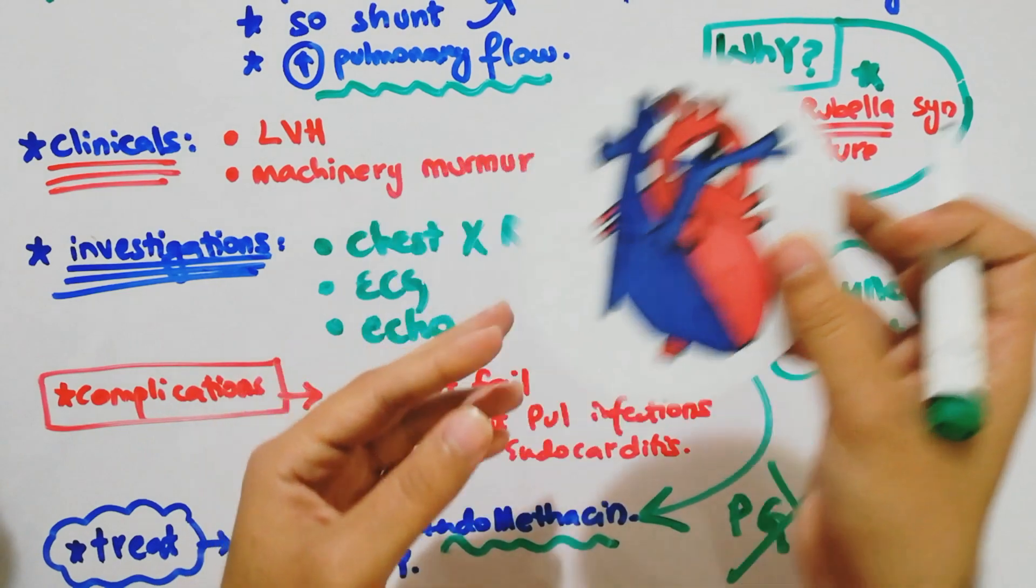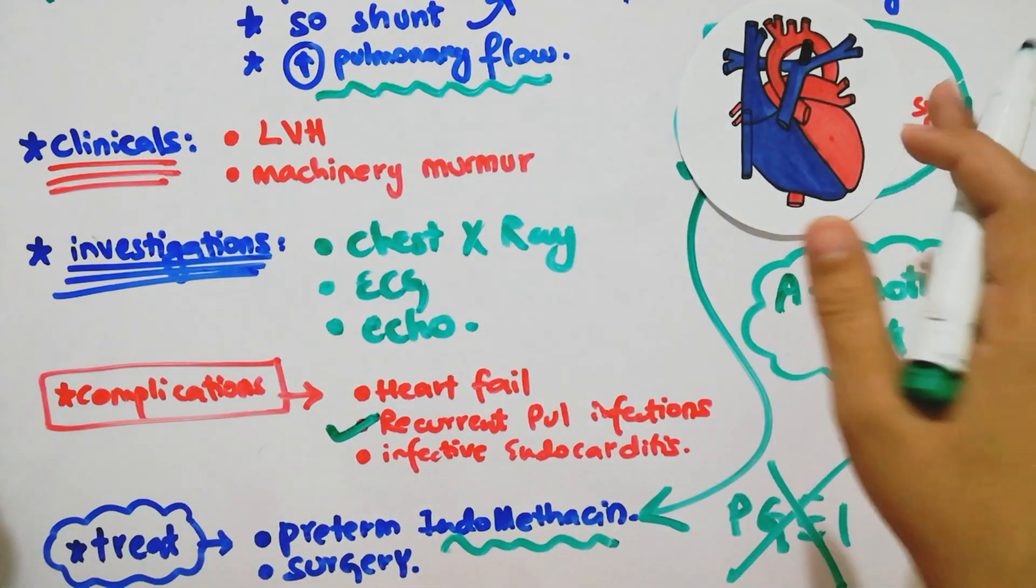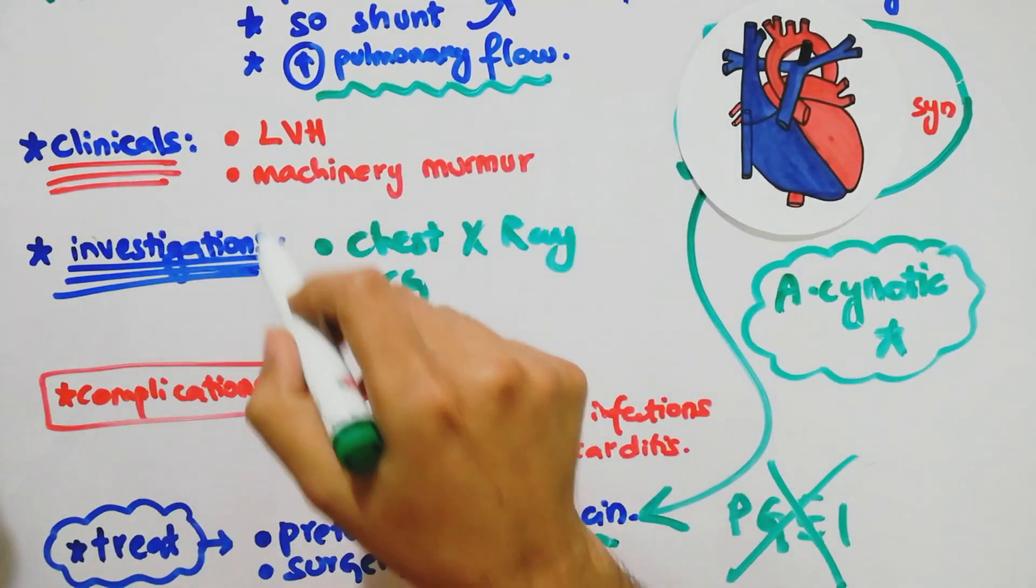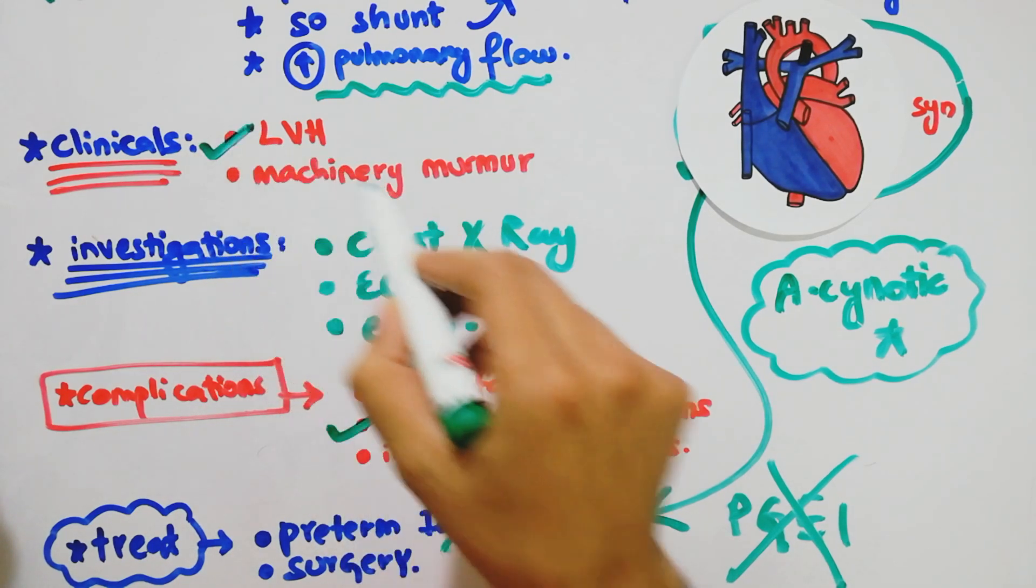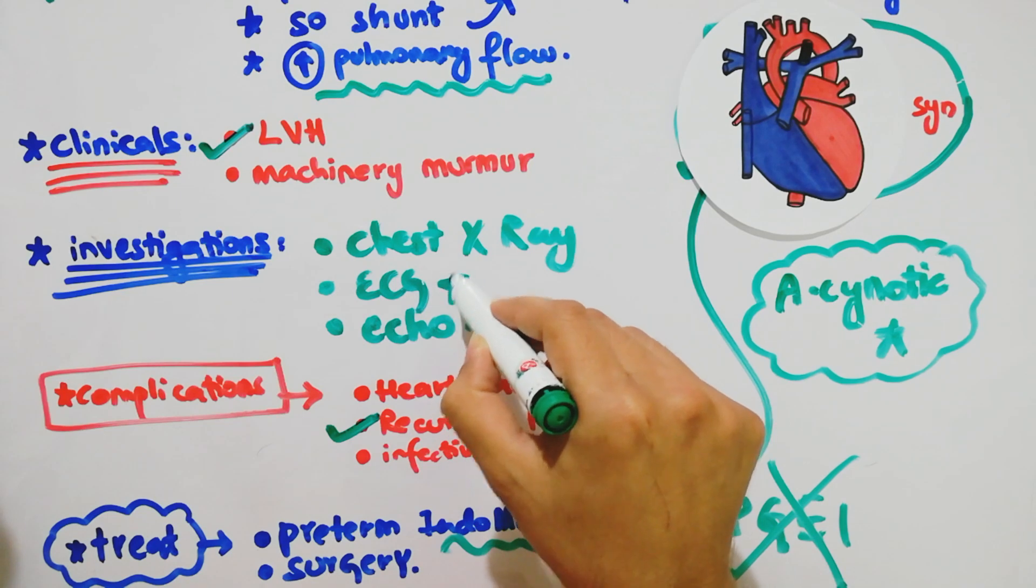The clinical findings - left ventricular hypertrophy and machinery murmur. For investigations, we will look at chest X-ray, ECG, and echo.